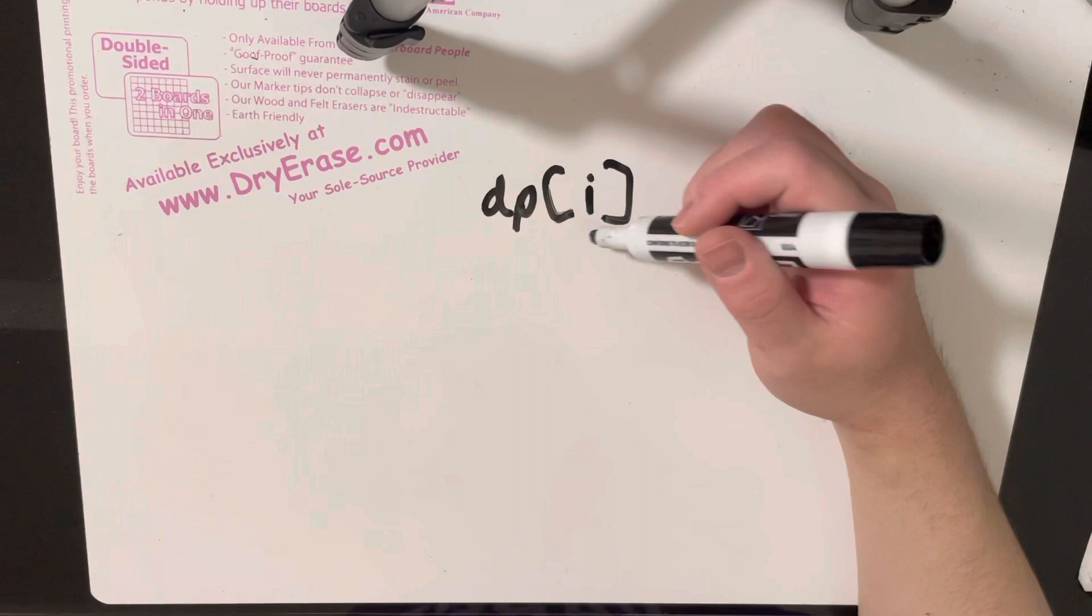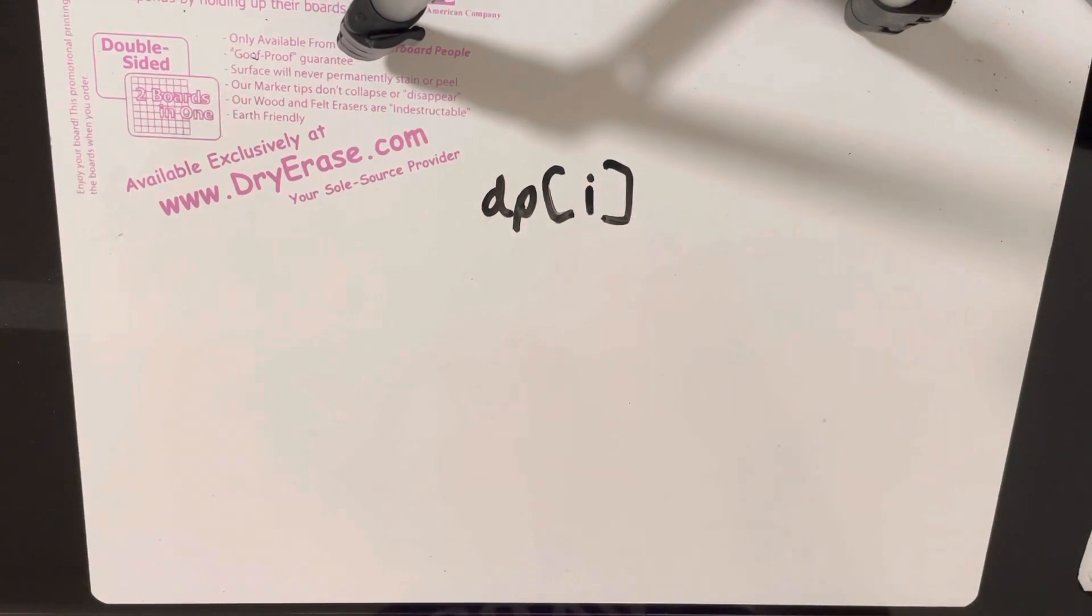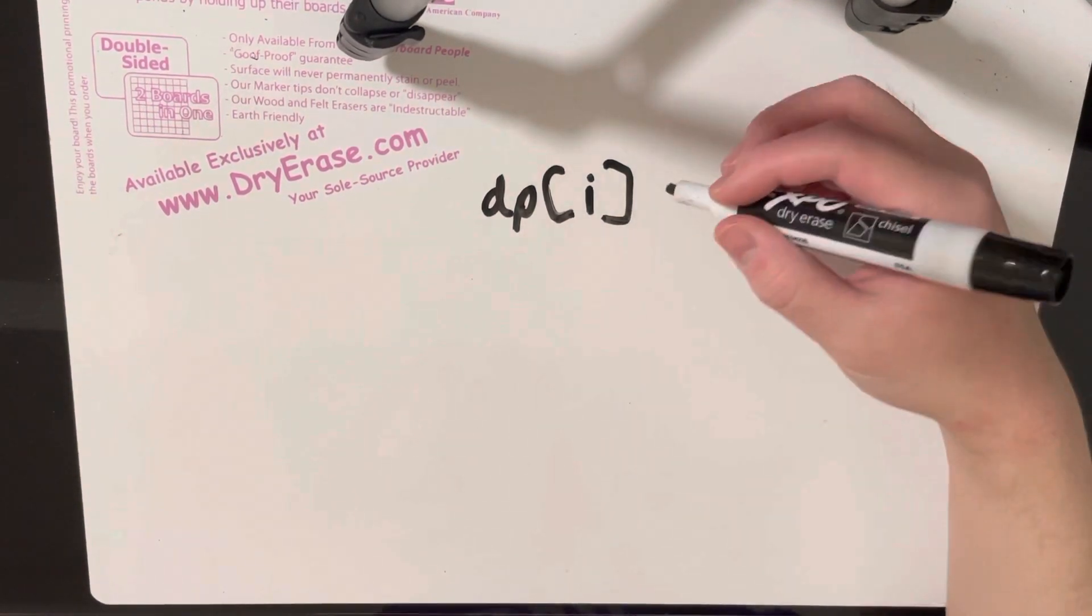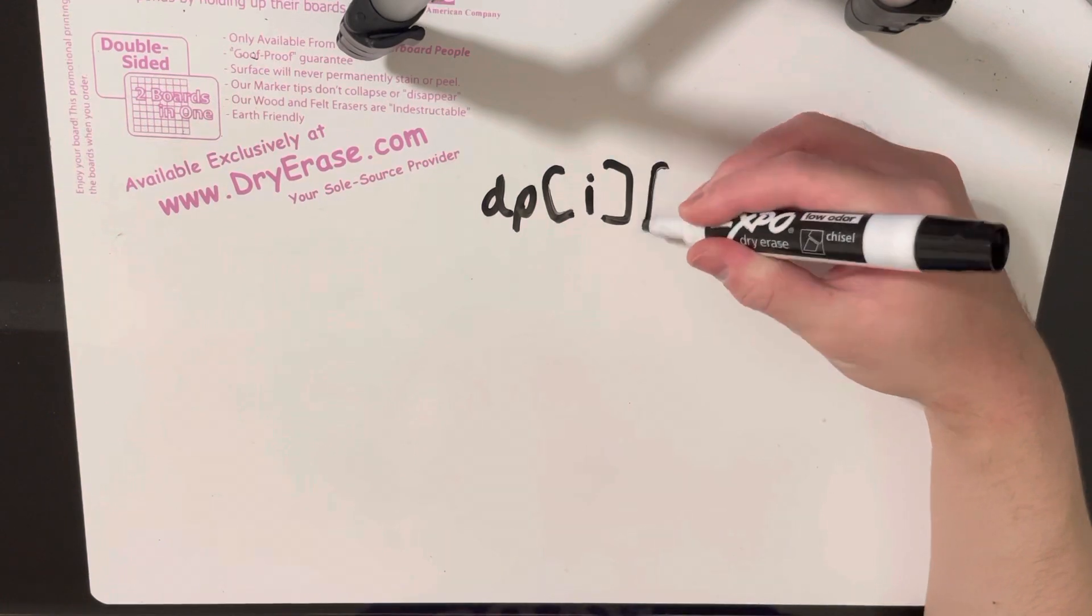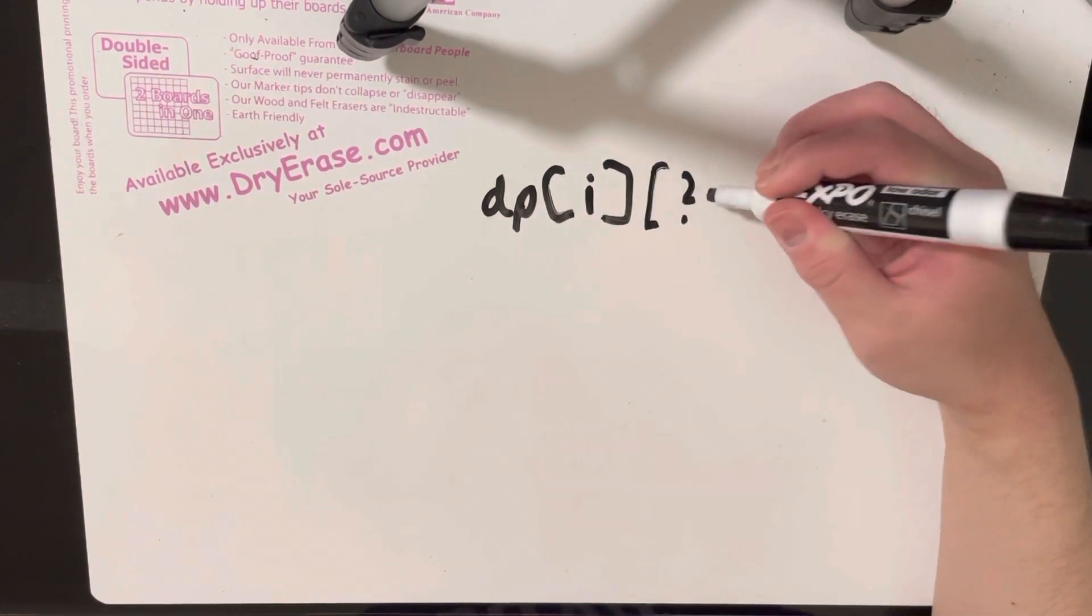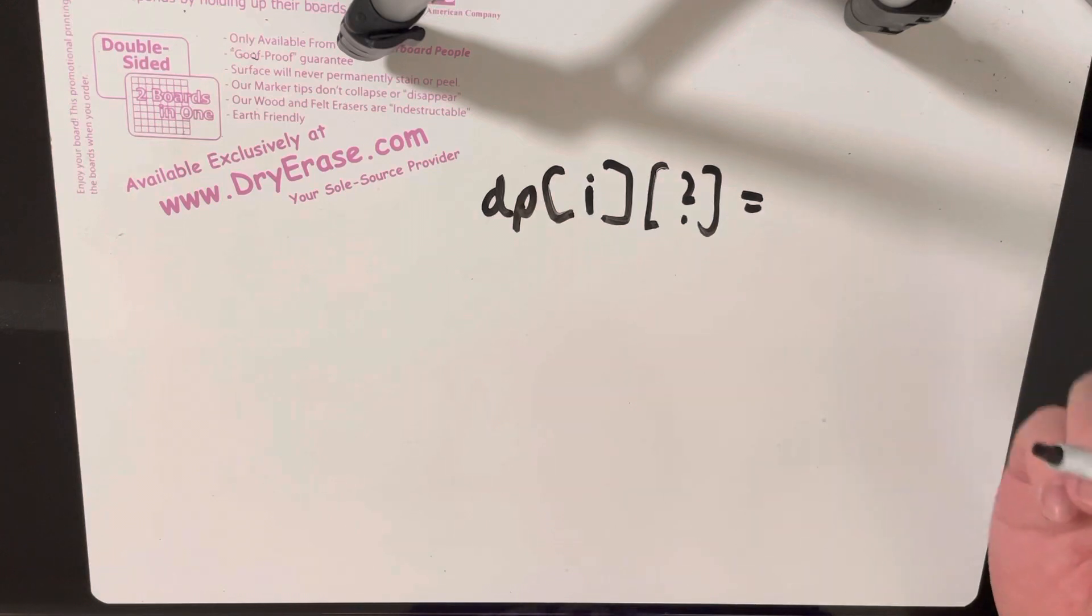And so now all we have to do is to figure out what the second attribute is. And on top of that, what the DP value should equal to.